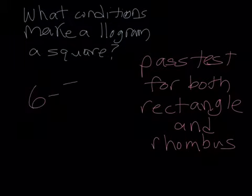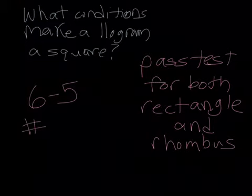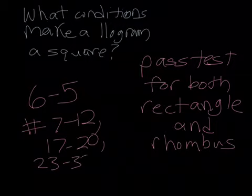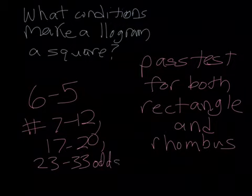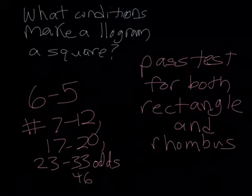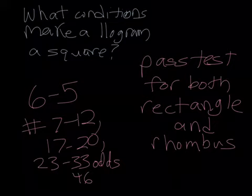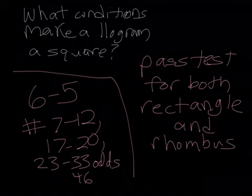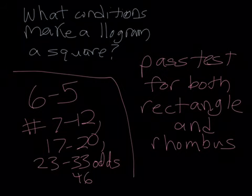Here, you're going to be working in your book today in section 6.5 and your assignment is numbers 7 through 12, 17 through 20, 23 through 33 just the odds in that section, and then number 46. Now remember, you're getting your class time on Wednesday in class to work on this. So you should be getting out your textbooks and you should be working through this section while you are there. And then I will be back to class on Thursday and we will go over the workbook page and this 6.5 section. I'll see you Thursday.